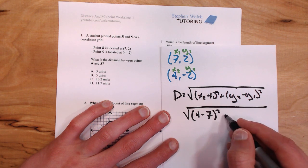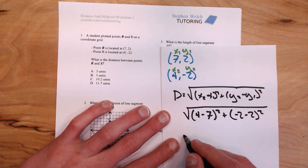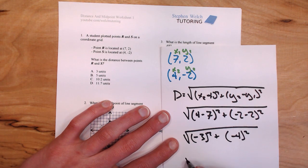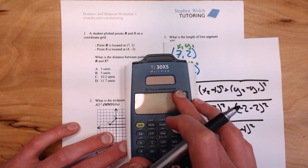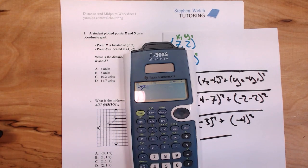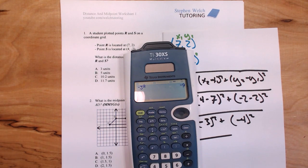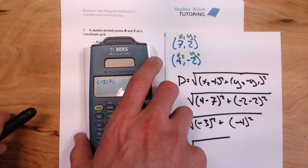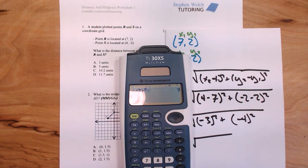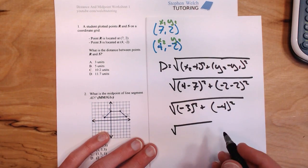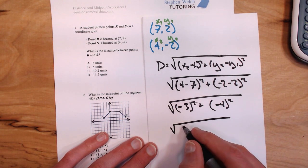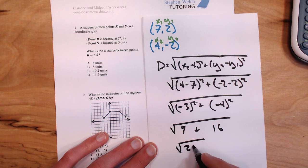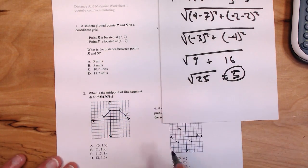So 4 minus 7 squared plus negative 2 minus 2 squared. That's negative 3 squared plus negative 4 squared. Important point: This is an easy calculator mistake. If you type in negative 3 squared and press enter, I get negative 9. But that's not the right answer. You need to use parentheses, just like in the formula. Put parentheses around the number and you get positive 9. In general, you should never get a negative number as a result of squaring something. So we have the square root of 9 plus 16, which is the square root of 25, which equals 5. So our answer must be B.